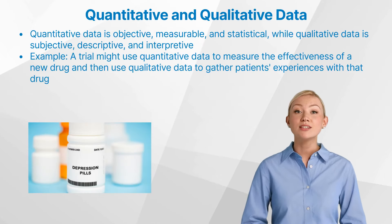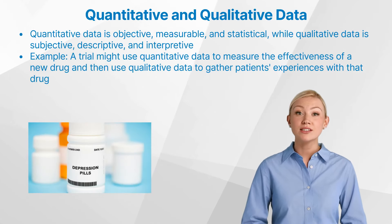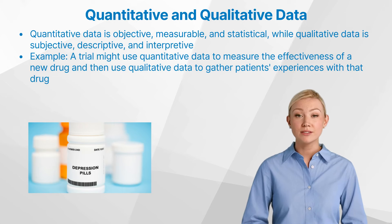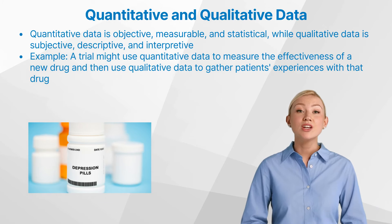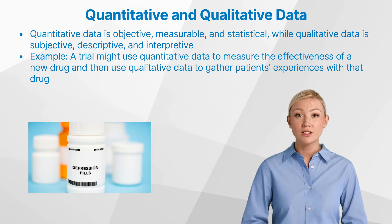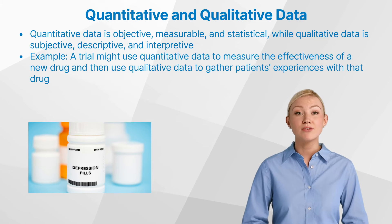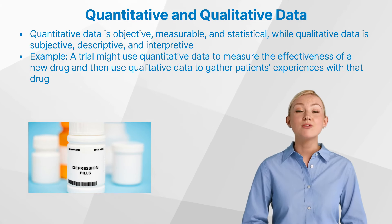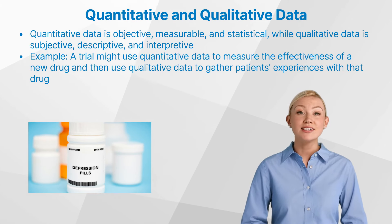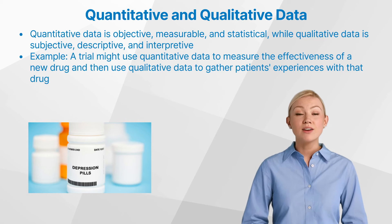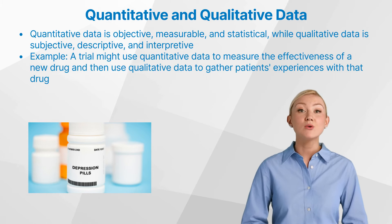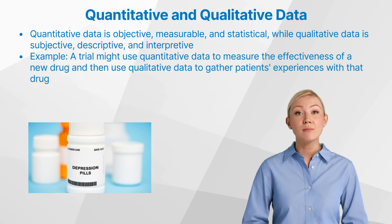While both types of data are important, they offer different perspectives. Quantitative data is objective, measurable, and statistical, while qualitative data is subjective, descriptive, and interpretive. The former provides breadth, allowing for comparisons and generalizations, while the latter offers depth, revealing nuances and complexities.